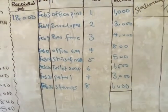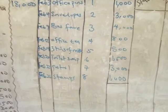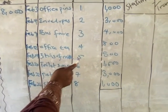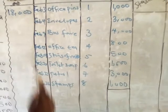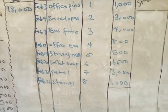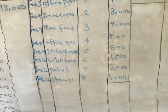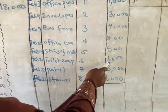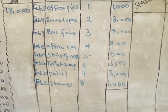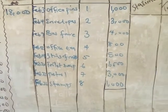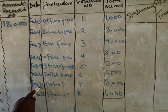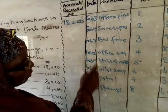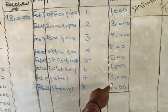On February 14th she paid for three tins of meat, which is $500 — voucher number 5. On February 20th she paid for toilet soap, which is $1,500 — voucher number 6. On February 22nd she paid for petrol, which is $3,000. You can see how we record it: under the date February 22nd, the name of the item petrol is written under particulars, voucher number 7, and the amount is $3,000.